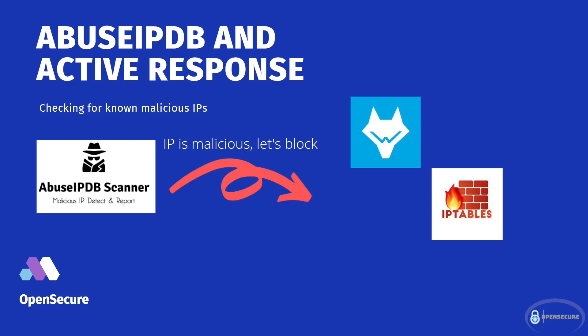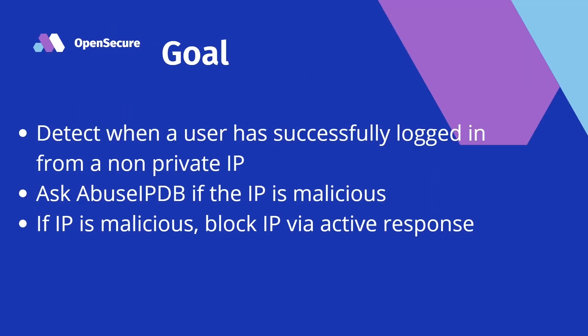The flow of how this is going to work: we're first going to detect when a user has successfully logged into our box from a non-private IP address. In the last video we touched on detecting unsuccessful logins, but now we're going to detect successful logins from a non-private IP address, and then we're going to ask AbuseIPDB if that IP is malicious, piggybacking off our AbuseIPDB integration script from the previous video.